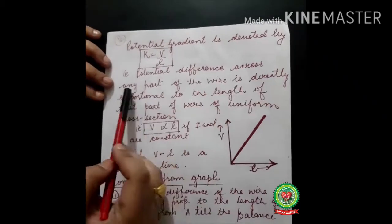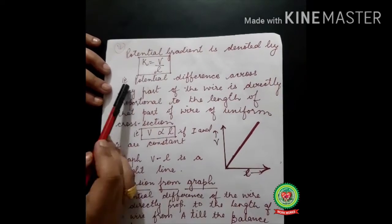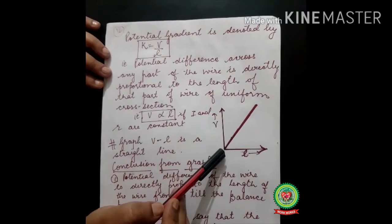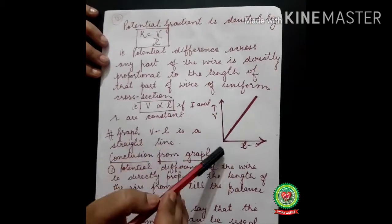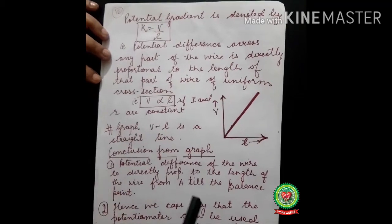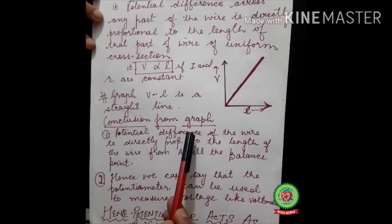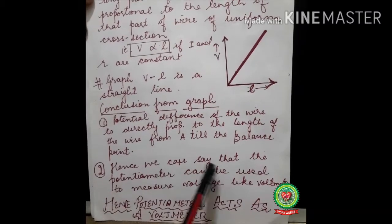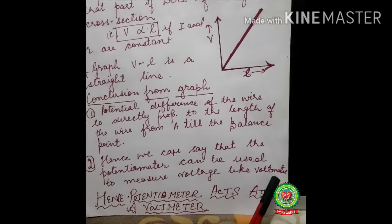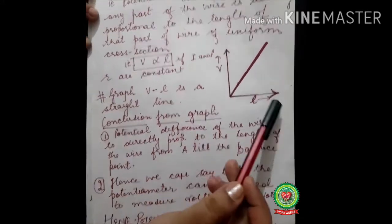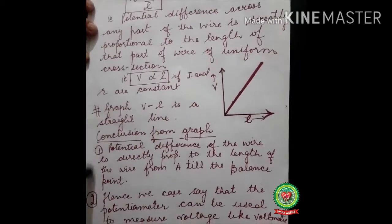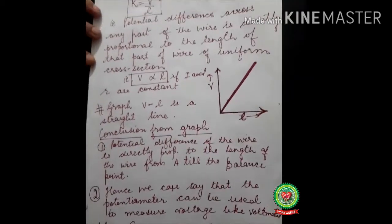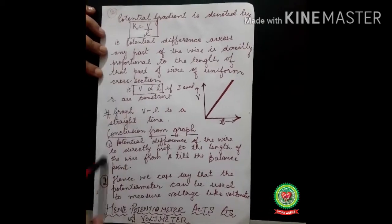The potential difference across any part of the wire is directly proportional to the length of the wire. As seen in this graph, with the change in length the voltage changes — if length increases, voltage increases — giving a straight-line graph. So the potentiometer can be used to measure voltage like a voltmeter. With the change in length we can find the potential difference, and hence a potentiometer acts as a voltmeter.